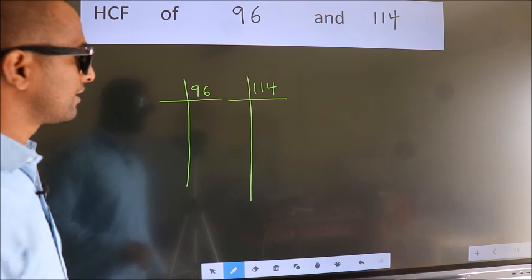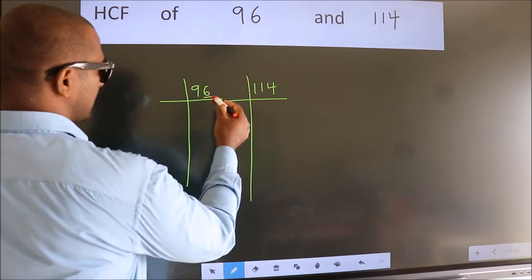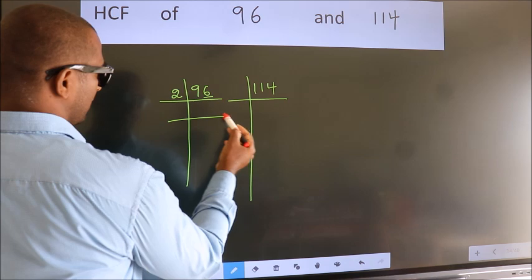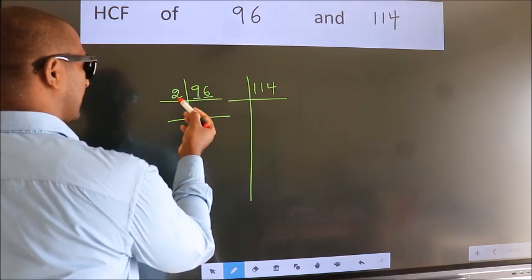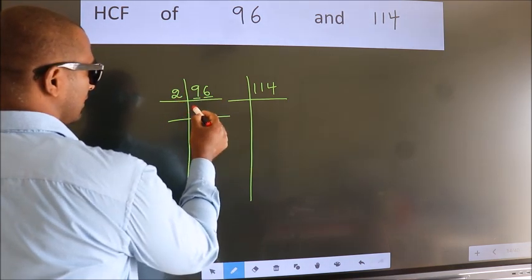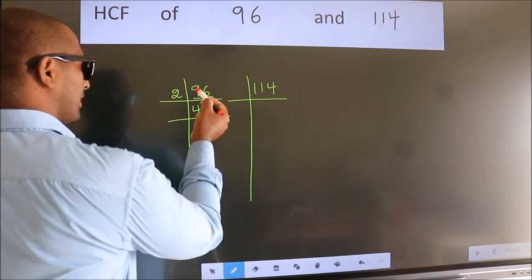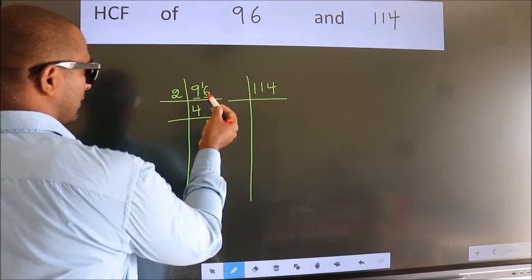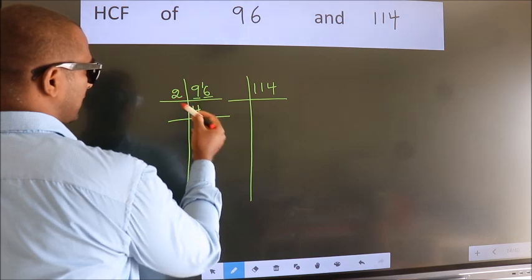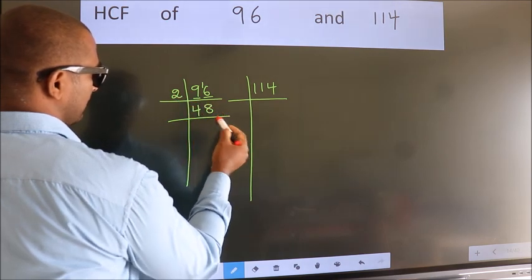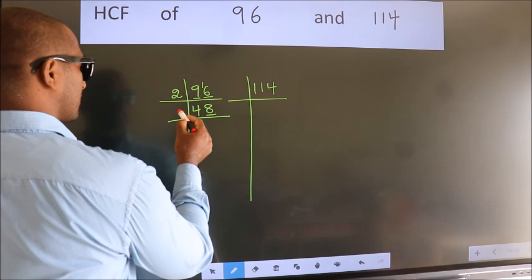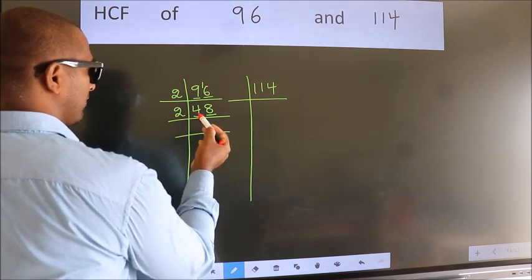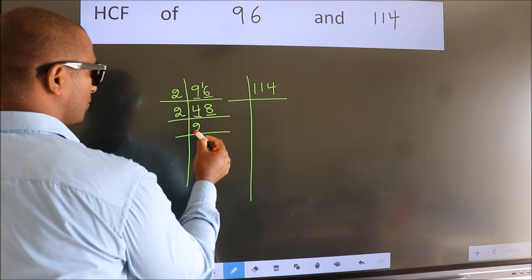Next. Last digit 6, even, so take 2. First number 9, a number close to 9 in 2 table is 2 fours 8. 9 minus 8 is 1, 1 carried forward 16. When do we get 16 in 2 table? 2, 8 is 16.